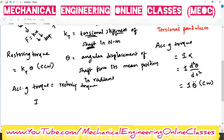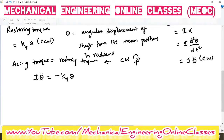I can write the accelerating torque as I·theta double dot. Assuming a sign convention where clockwise rotations are positive and counter-clockwise rotations are negative: I·theta double dot is positive (clockwise), and this should equal the restoring torque KT·theta with a negative sign because it acts in the reverse direction. Rearranging: I·theta double dot + KT·theta = 0.